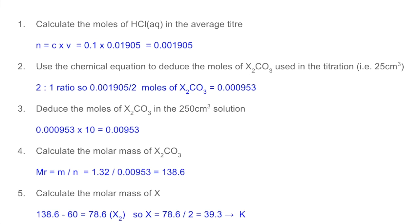So the first thing, calculate the moles of HCl in the average titre. That's concentration times volume. Just remember volume must be in dm³ and you can see there's the answer there.